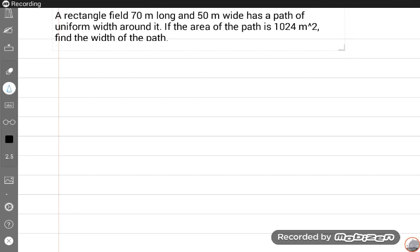This is the question: a rectangular field 70 meters long and 50 meters wide has a path of uniform width around it. Uniform width - concentrate on the wording, this is the basic tool of these questions. Every word has worth. If the area of the path is 1024 meters square, find the width of the path. Read this question again and make the correct diagram according to this question.